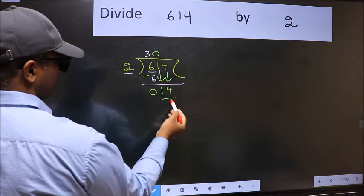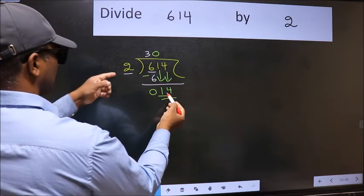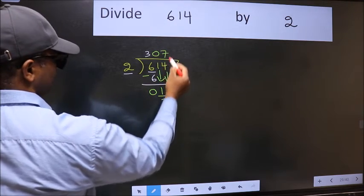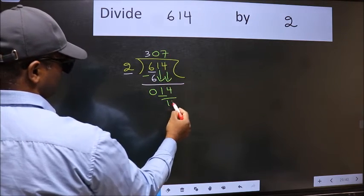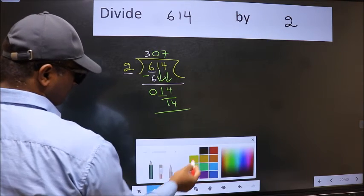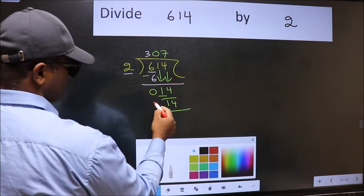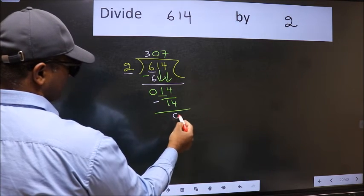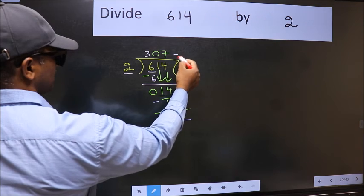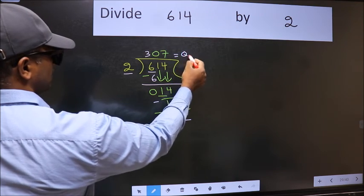Now 14. When do we get 14 in the 2 table? 2 times 7 is 14. Now we should subtract. We get 0. So this is our quotient.